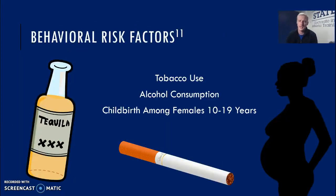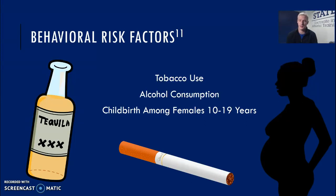When we begin to understand why these minority populations have these health disparities, we need to understand that tobacco use, alcohol consumption, and childbirth are some of the risk factors. Tobacco use and alcohol consumption is highest in minorities, where we see that African Americans and American Indians have high use of alcohol and tobacco. We also see that childbirth among females ages 10 to 19 is the highest among minority populations compared to majority populations.